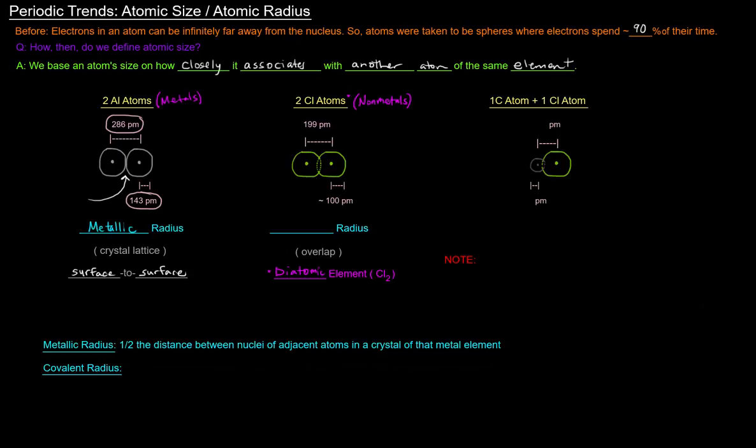But the principle is pretty much the same in terms of how we measure the radius. We take the distance from one nucleus to the other, and in this case that distance, in the case of chlorine, is 199 picometers.